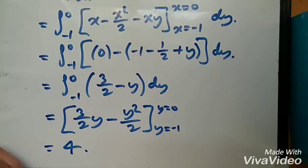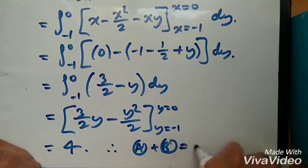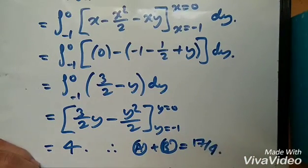Yeah, spoiler, I actually cheated there. And hence, the final solution, A plus B, is 17 over 4. Thanks guys.